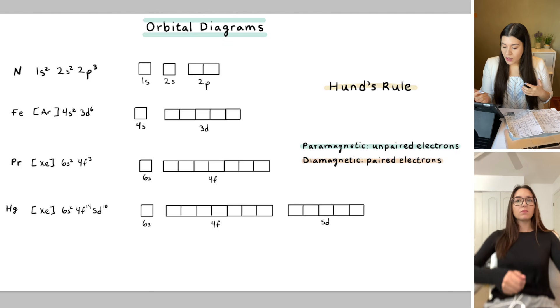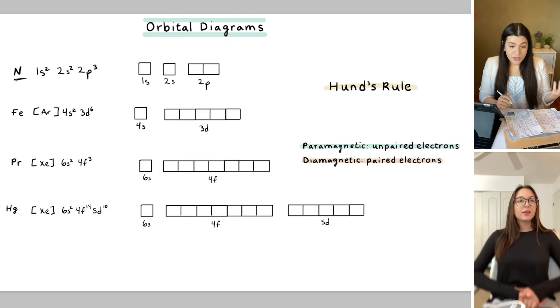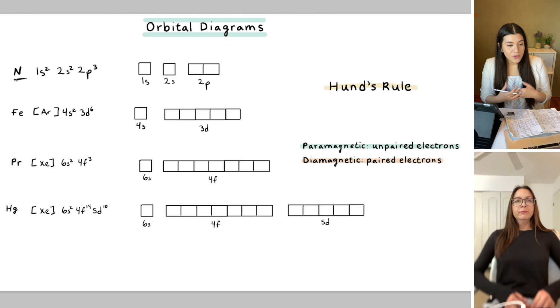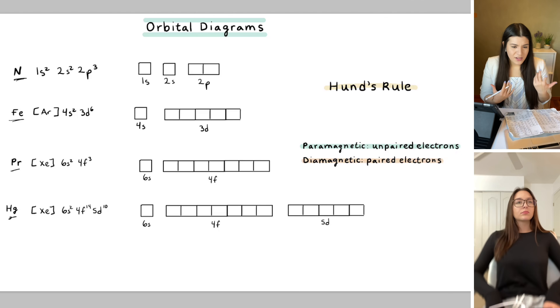Now, if we were to draw the orbital diagram for nitrogen, I would start this off with actually writing out the electron configuration. They're either going to tell you to do the full electron configuration, which I have here for nitrogen, or the condensed one, which I wrote for everything else. And it's just kind of dependent on how high up or how down the element is, I'd say.